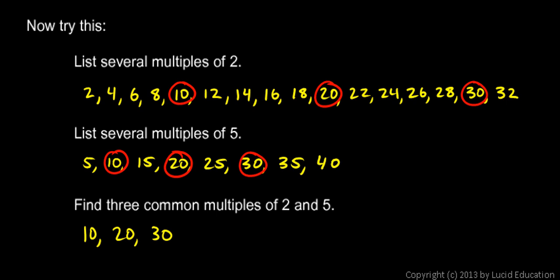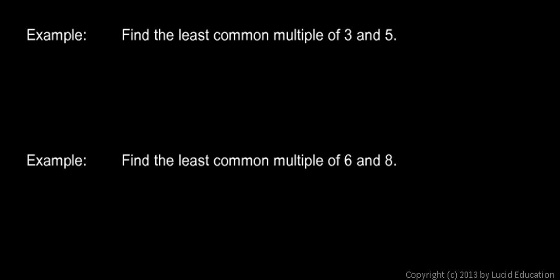And being able to find common multiples of 2 numbers, and in particular, the least common multiple of 2 numbers. The least one in this case would be 10. 10 is the least of these common multiples. Being able to find common multiples and the least common multiple helps us, or will help us, as we will see, to do more work with fractions. Here are two examples.